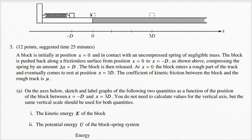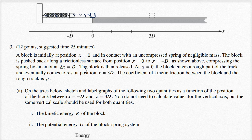So the block starts here and it's just in contact with the spring — the spring is uncompressed and just touching the block. Then we start to compress the spring by pushing the block to the left, and we compress it by an amount d. Delta x is equal to d, so we move this block back to the left by d, which compresses the spring by d.